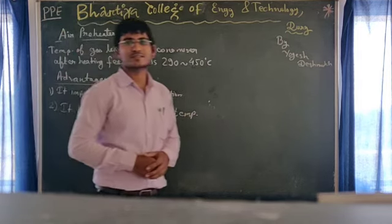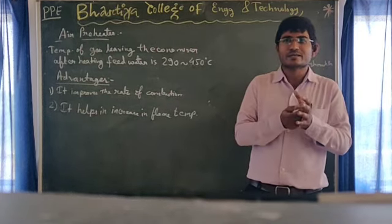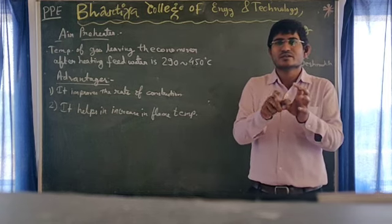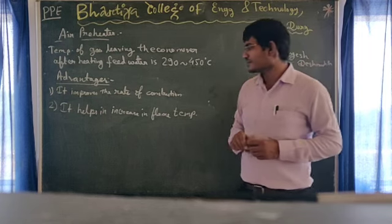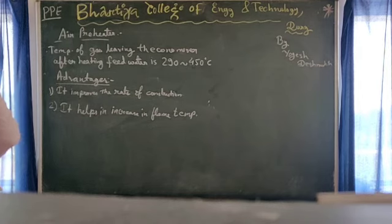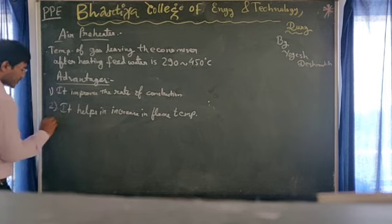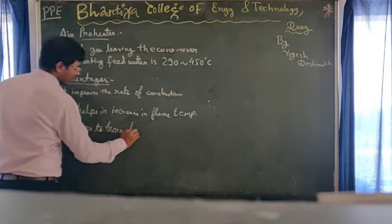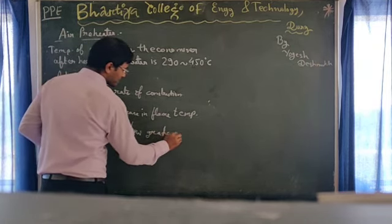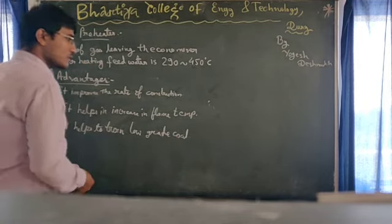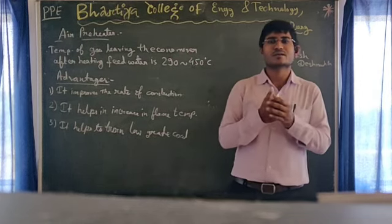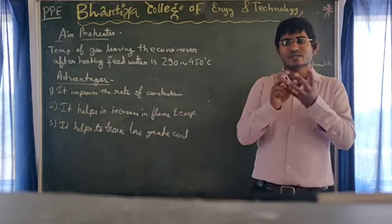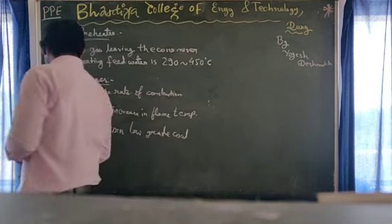The temperature of the flame increases because as combustion is going on and hot air flows in, the air contains oxygen and it improves the combustion conditions. With hot air it also improves the temperature, thereby increasing the flame temperature. Third, it helps to burn low-grade coal. As we are supplying hot air, even low-grade coal will get heated easily and will burn properly. Hence, it helps in the burning of low-grade coal.